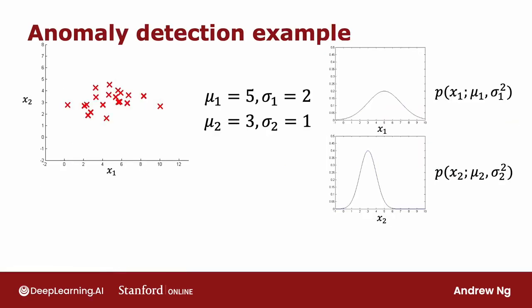Now let's take a look at what all this actually means on one example. Here's the dataset with features x₁ and x₂. And you notice that the features x₁ take on a much larger range of values than the features x₂. If you were to compute the mean of the features x₁, you end up with 5, which is why μ₁ is equal to 5. And it turns out that for this dataset, if you compute σ₁, it would be equal to about 2. And if you were to compute μ₂, the average of the features on x₂, the average is 3. And similarly, its variance or standard deviation is much smaller, which is why σ₂ is equal to 1. So that corresponds to this Gaussian distribution for x₁ and this Gaussian distribution for x₂.